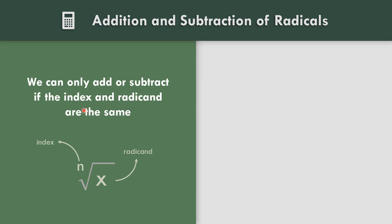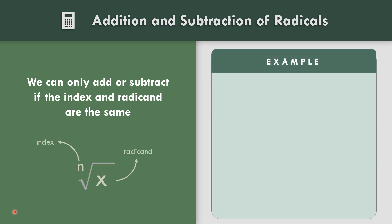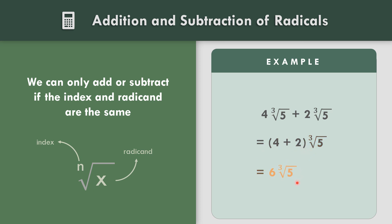We can only add or subtract if the index and radical are the same. In the given example, 4 cube root of 5 plus 2 cube root of 5, we have the same index, that is 3, and same radical, that is 5. So cube root of 5 are the same, and we can combine. That becomes the quantity 4 plus 2, times cube root of 5. 4 plus 2 equals 6, so the answer is 6 cube root of 5.